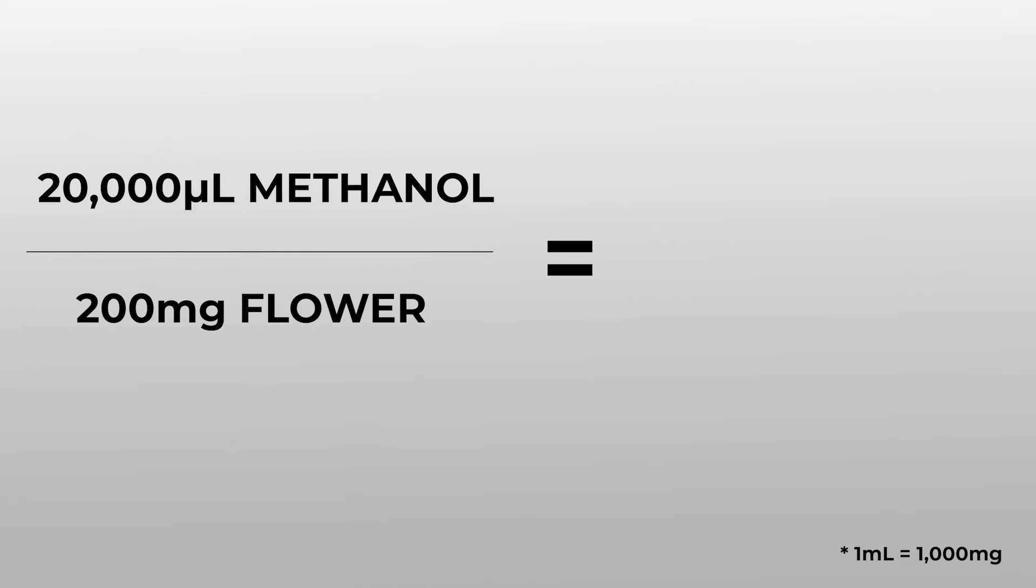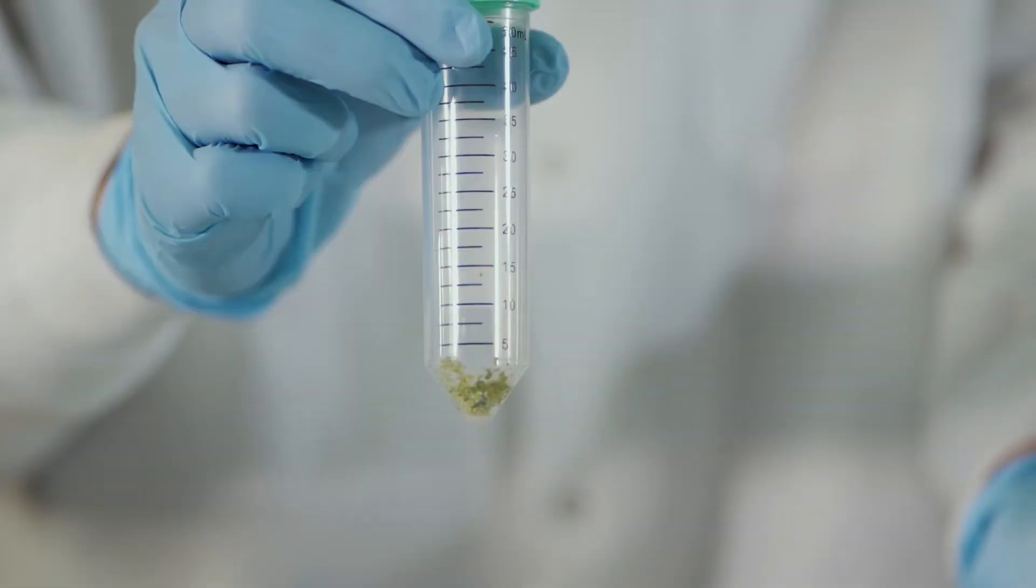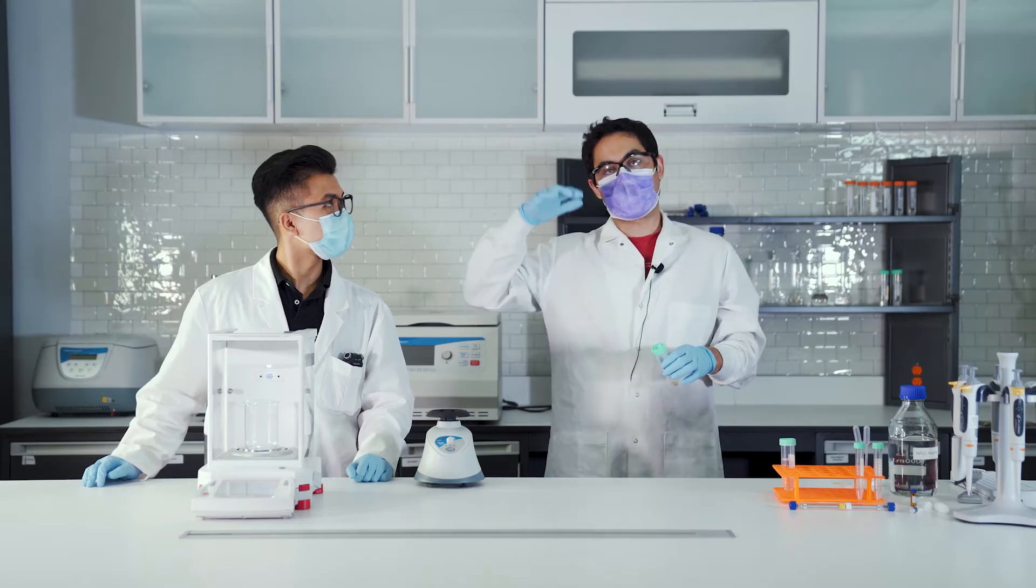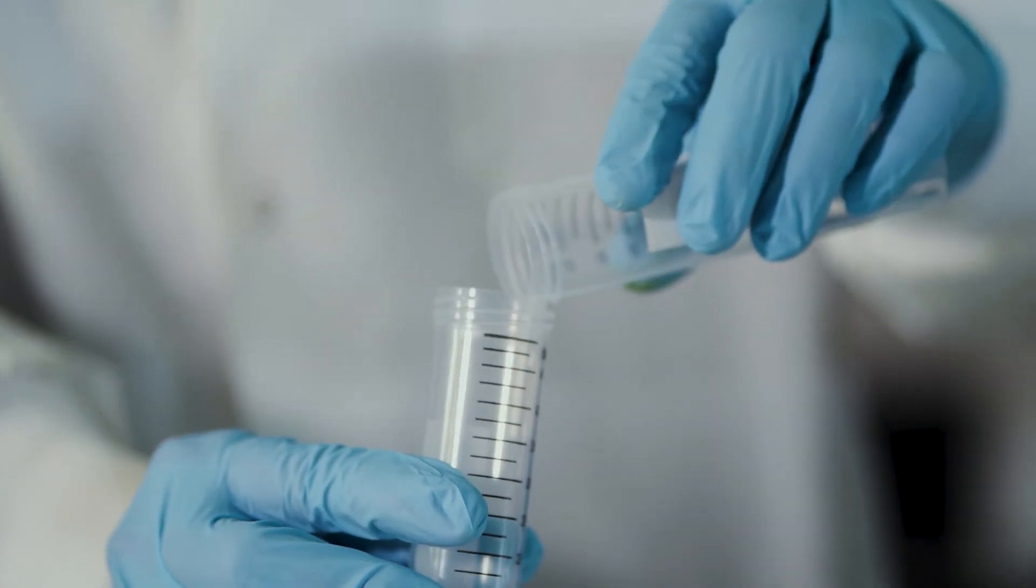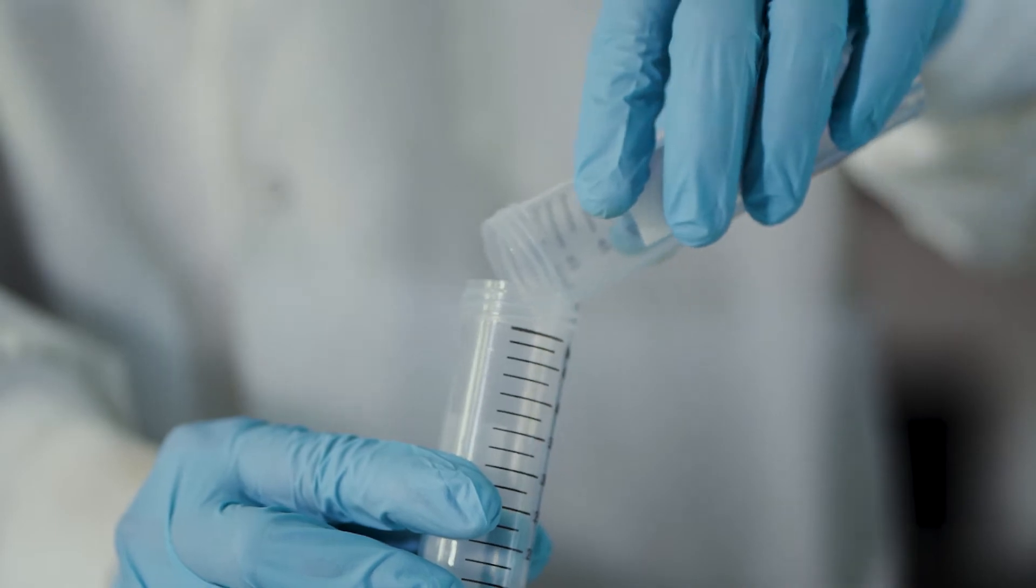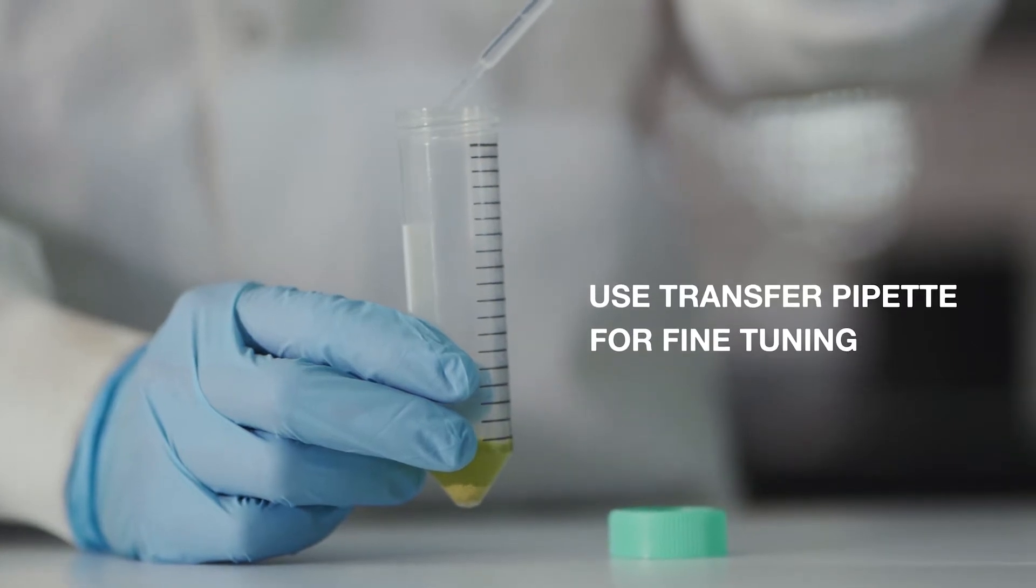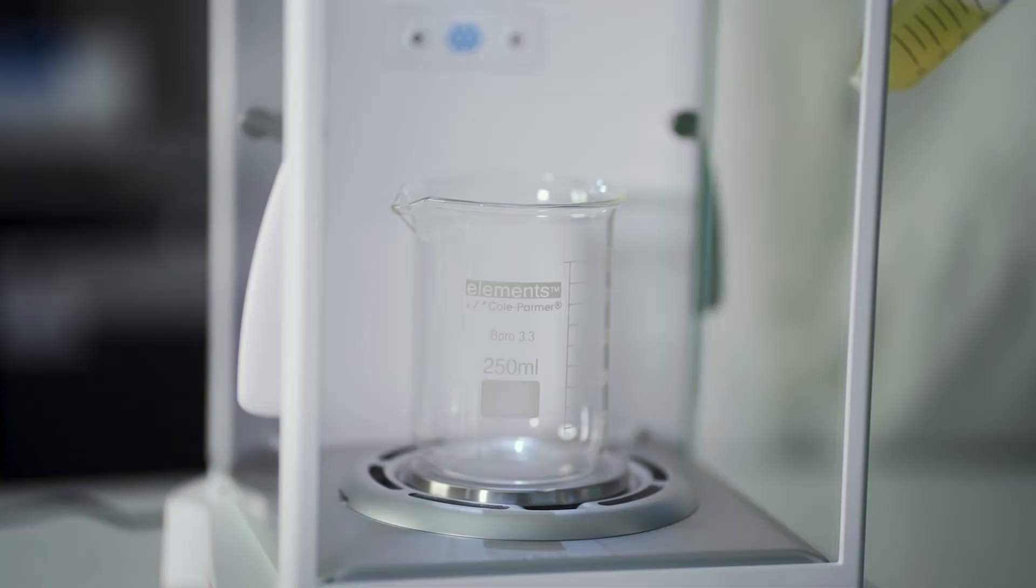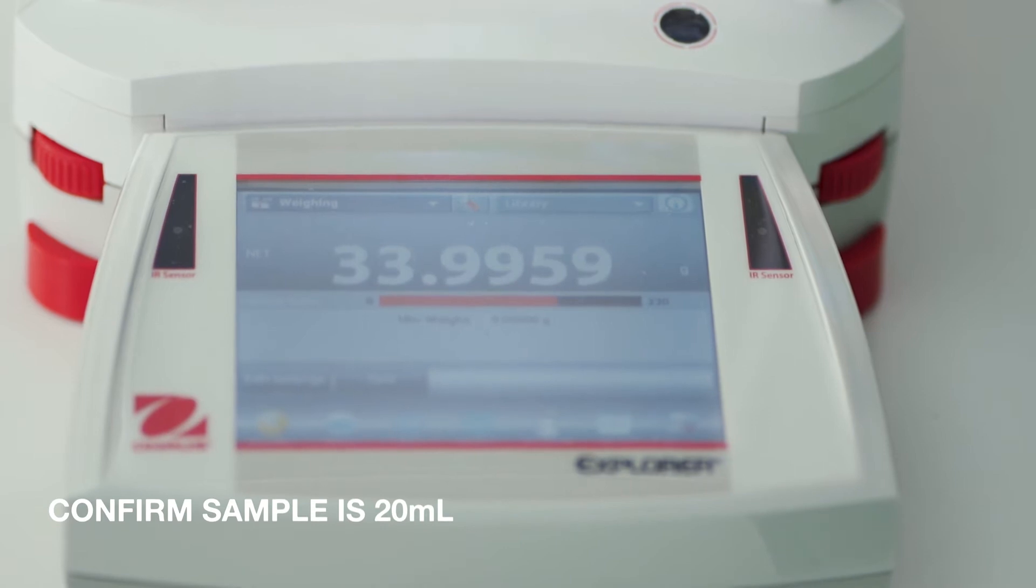Now that we have our sample in the centrifuge tube, we want to dilute it up to 20 mils. We're gonna go ahead and dilute up to the mark. When I'm getting pretty close, what I like to do is I like to use a transfer pipette for fine-tuning. Then just to be certain, we can go ahead and weigh it and record the weight.